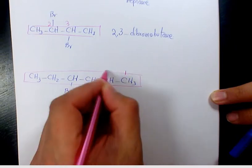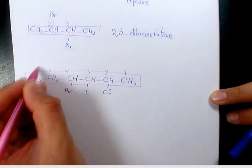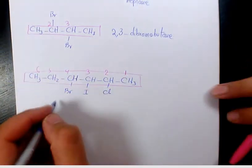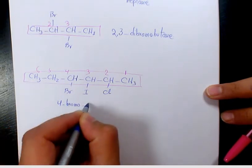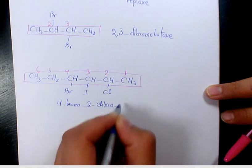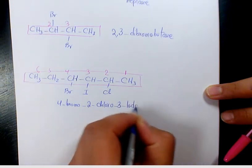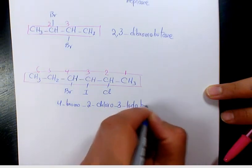So it is going to be four bromo, two, four, three iodo hexane.